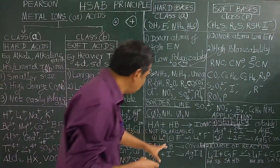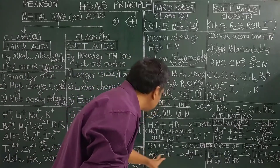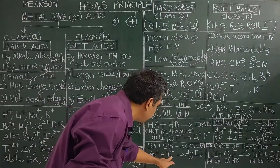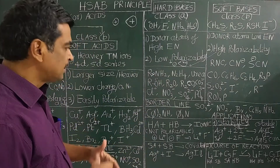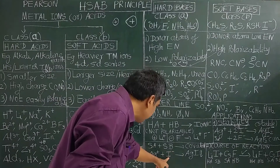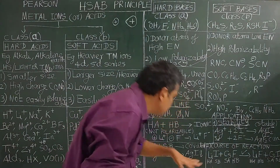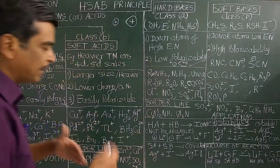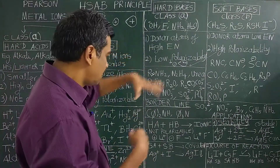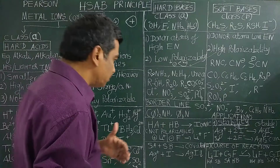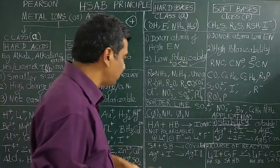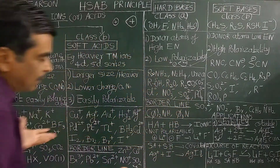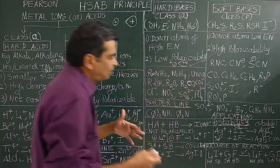In the case of Ag+ (soft acid) and I− (soft base), soft acid preferably interacts with soft base to give silver iodide, which is a purely covalent compound because they are easily polarizable. The concept of polarizability and polarizing power was explained in a previous video. Since AgI is a covalent compound, it is insoluble in water, which is a polar solvent.